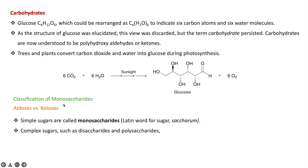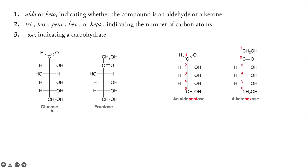When you classify carbohydrates, you classify them into monosaccharides, disaccharides, and polysaccharides. Monosaccharides are the simple form of sugar, while disaccharides and polysaccharides are complex sugars. Further, monosaccharides are classified into aldoses and ketoses — 'aldo' representing aldehyde and 'keto' representing ketones.